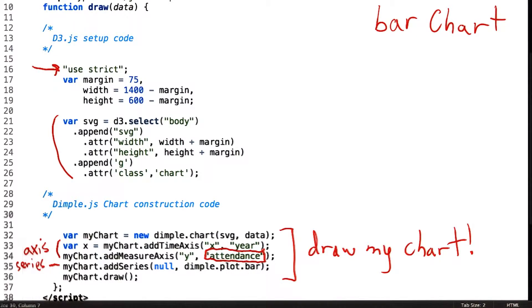The Dimple code to draw the bar chart is only five lines. In D3, this would take around 30 lines and introduces many more sources of error.